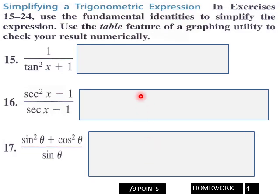Page 4: use the fundamental identities to simplify the expression. Use the table feature of your graphing calculator to check your result numerically. Simplify these in the response boxes here. This is 9 points for page 4.